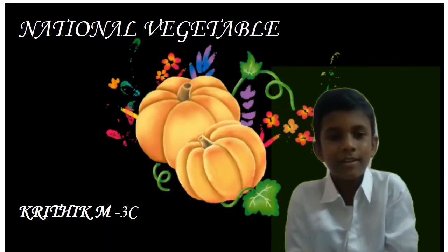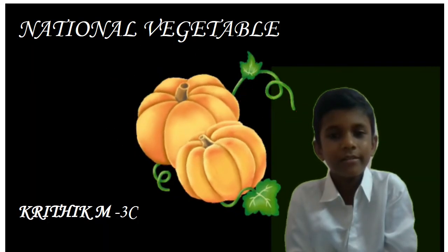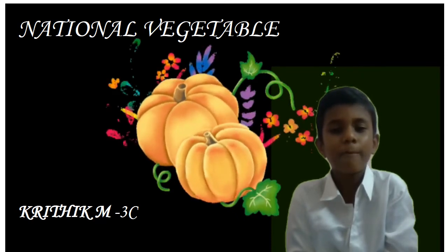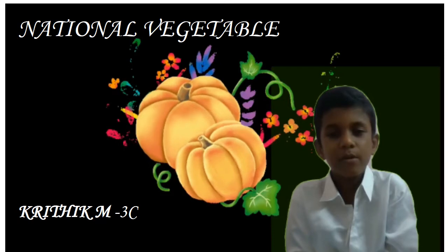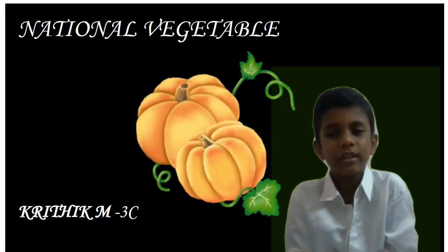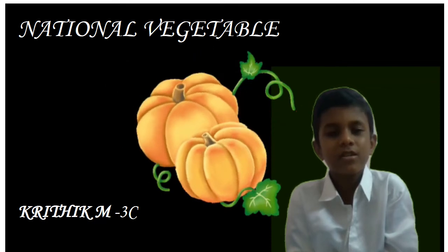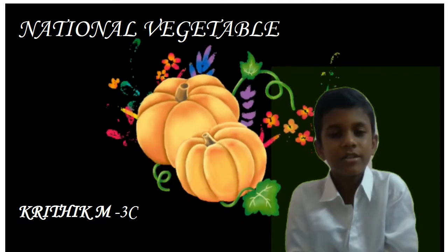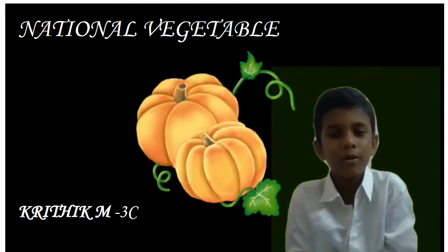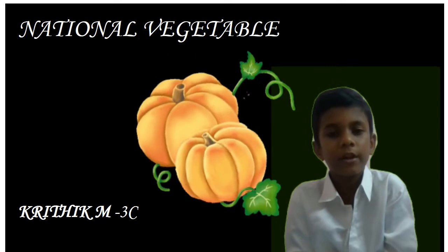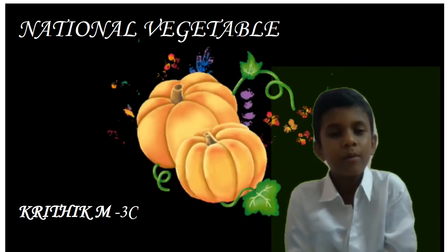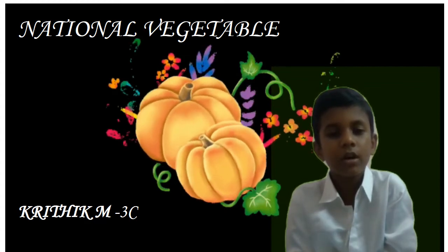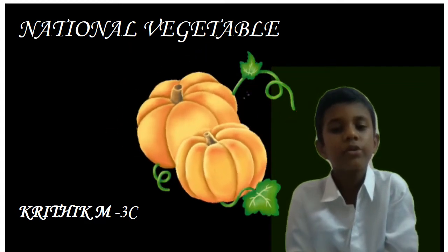The Indian pumpkin is the country's national vegetable. It is known as the poor man's vegetable since it grows quickly and produces great yield. It is grown and consumed in almost all parts of tropical India. Pumpkins are produced all over the world, and only Antarctica is unable to grow pumpkins.